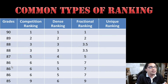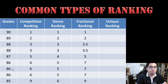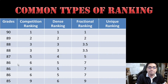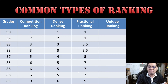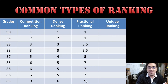Now for 86, there are three 86s. These occupy the 6th, 7th, and 8th spots. So 6 plus 7 plus 8 equals 21, divided by the number of grades in this place — 21 divided by 3 — that is why these three grades all have a fractional ranking of 7. And then the next place is 9 because the last place does not have a tie.